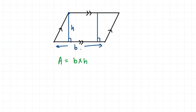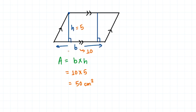Let's look at an example. If the base is 10 centimeters and the height is 5 centimeters, then the area is base times height — 10 times 5 — which is 50 centimeters squared. So it's pretty easy in the case of a parallelogram. You just multiply base and height to get your area.